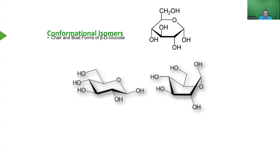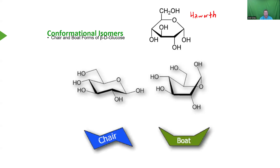When it comes to what a cyclic form of glucose actually looks like in reality, it's not going to look like this Haworth projection, because the atoms aren't that far from one another and they adopt different bond angles. Glucose will more than likely take on the chair or boat conformation you're familiar with from organic chemistry. For our purposes, I'm always going to use Haworth projections, though I'll bring back chair and boat conformations from time to time.